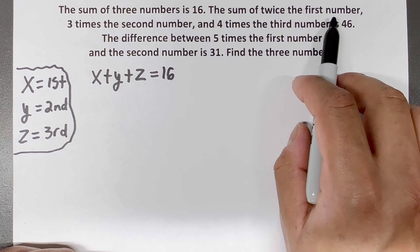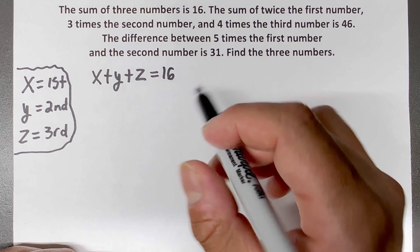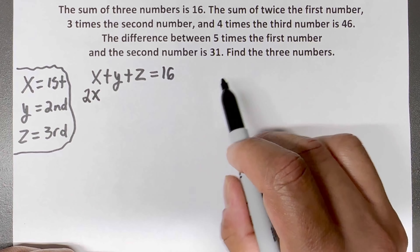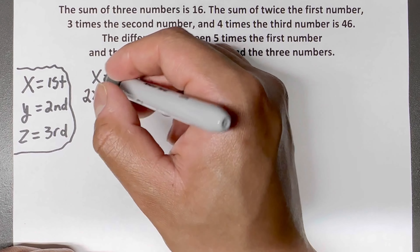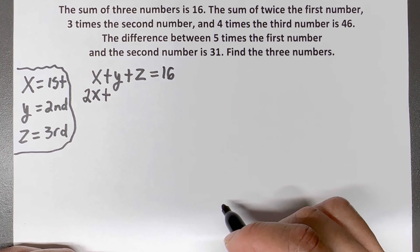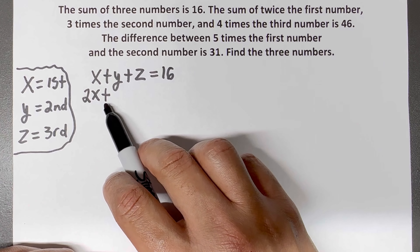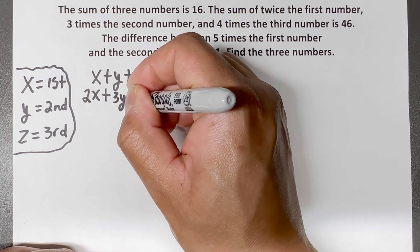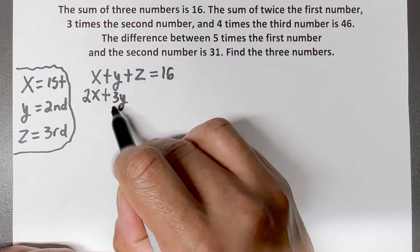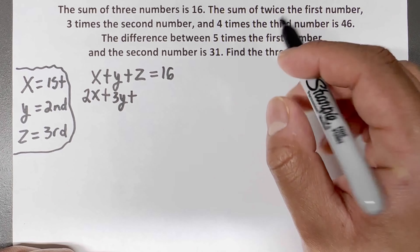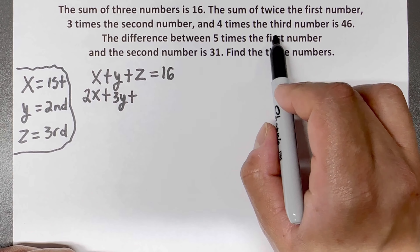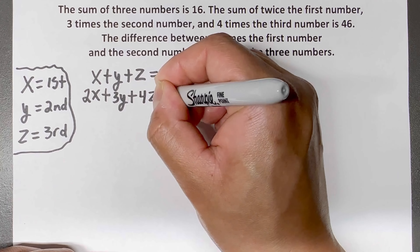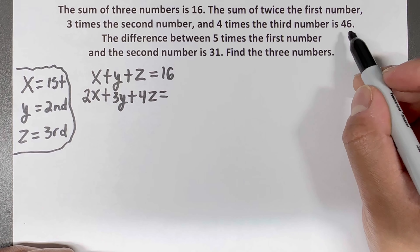The sum of twice the first number — so twice the first number is 2x — and 'sum' means plus. So the sum of twice the first number, three times the second number, which is 3y, and four times the third number, which is 4z, is 46.